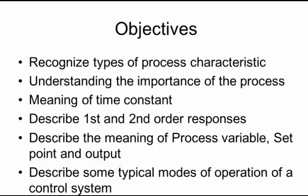The objective is basically recognizing types of process characteristics, and understanding the importance of the process and meaning of time constants and what they mean. We'll be talking about the first and second order responses, and also describing the meaning of PV — process variable — SP, which stands for set points, and outputs, and also describing typical modes of operation of a control system.